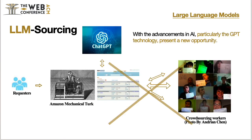Crowdsourcing, also known as collective wisdom, refers to requesters posting their questions in forms to online platforms such as Amazon Mechanical Turk. The question sheet is then distributed to crowd workers from all over the world, and this is a typical workflow of crowdsourcing. In crowdsourcing tasks, each task is associated with a monetary cost, and the goal of optimizing a crowdsourcing system is mostly focused on designing and minimizing the number of questions.